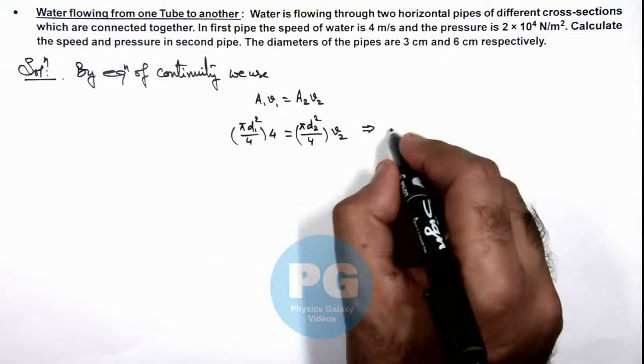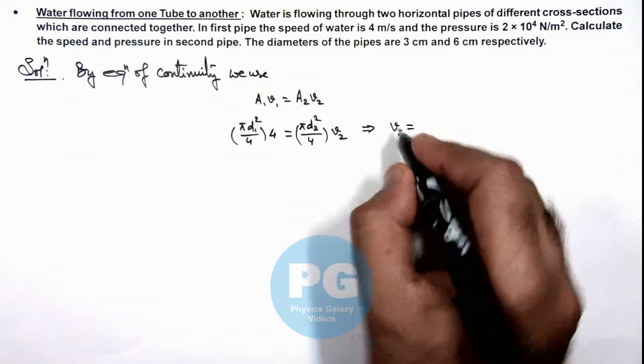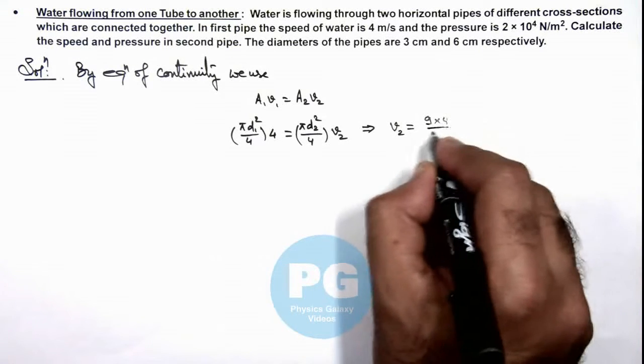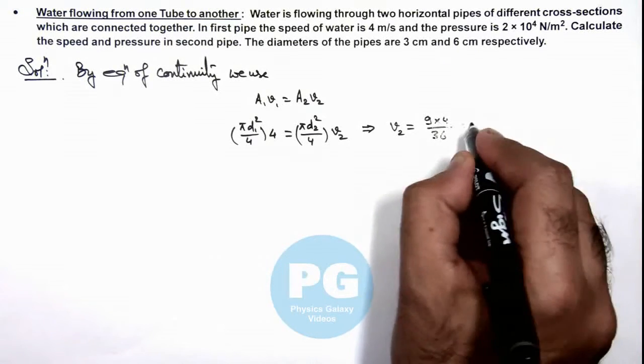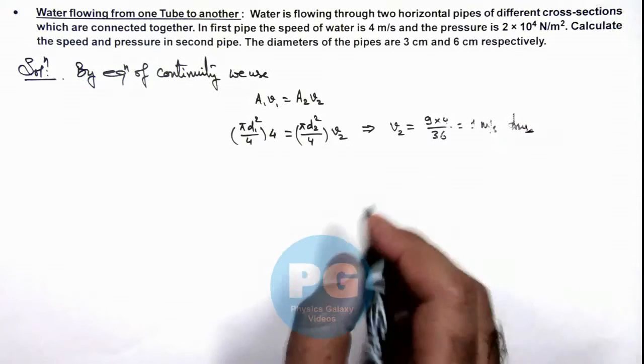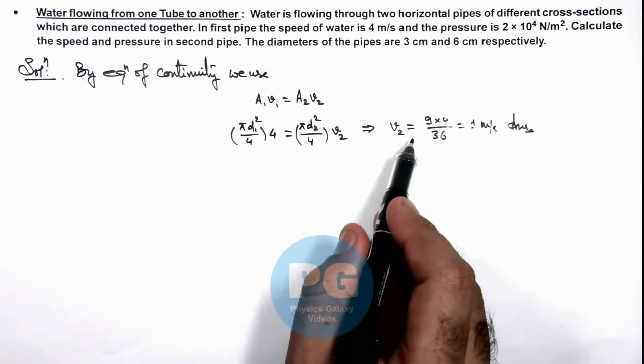We will be getting the value of v₂, the velocity in the second pipe, will be 9 multiplied by 4 divided by 36, that is 1 meter per second. That is one result of this problem, the speed of water in the second pipe.